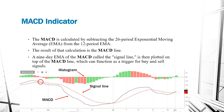When the MACD line crosses the signal line and goes underneath, it is a signal to sell. When the MACD line goes above the signal line, it's an indication to buy — the histogram also turns to zero when this happens. Conversely, when the MACD line goes beneath the signal line it's an indication to sell, and when it goes back up again it's a signal to buy.